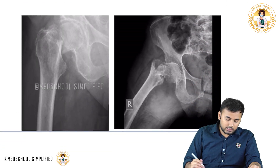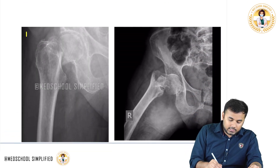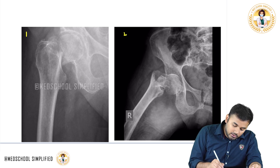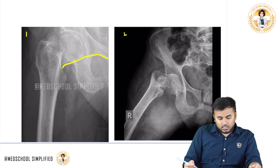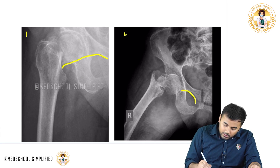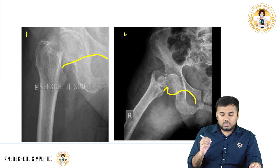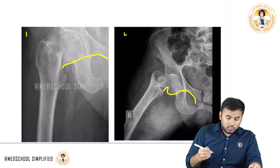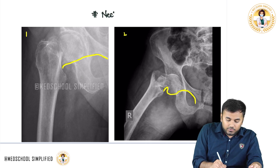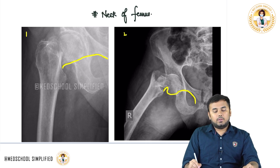Looking at x-ray examples: in x-ray number one, drawing the line from the inferior surface forms an arch. In x-ray number two, drawing the same line from the inferior surface also forms an arch. Comparing both x-rays, neither forms a perfect arch, which indicates that in both cases there is a fracture of the neck of the femur.